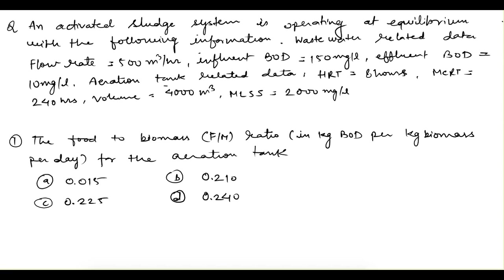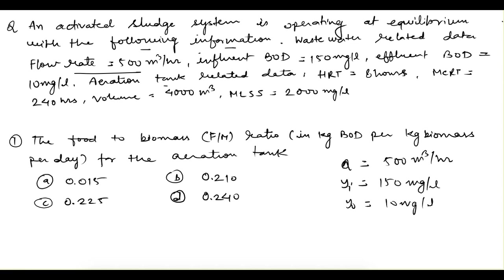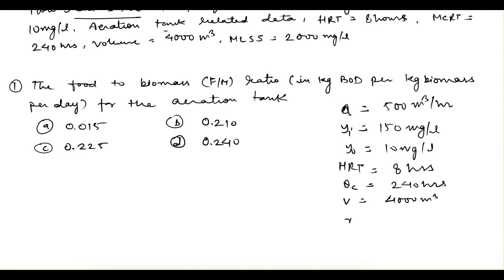Next problem: an activated sludge system is operating at equilibrium. Given data — flow rate Q = 500 m³/hr, influent BOD Yi = 150 mg/L, effluent BOD Y0 = 10 mg/L. Aeration tank data: HRT = 8 hours, CRT (sludge age) = 240 hours, volume of aeration tank = 4000 m³, and MLSS concentration X = 2000 mg/L.